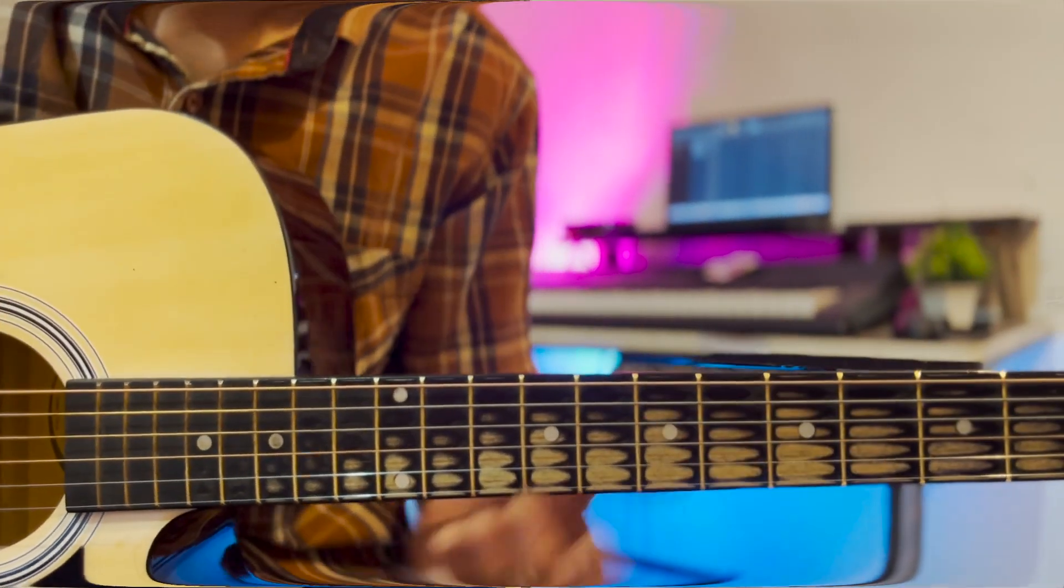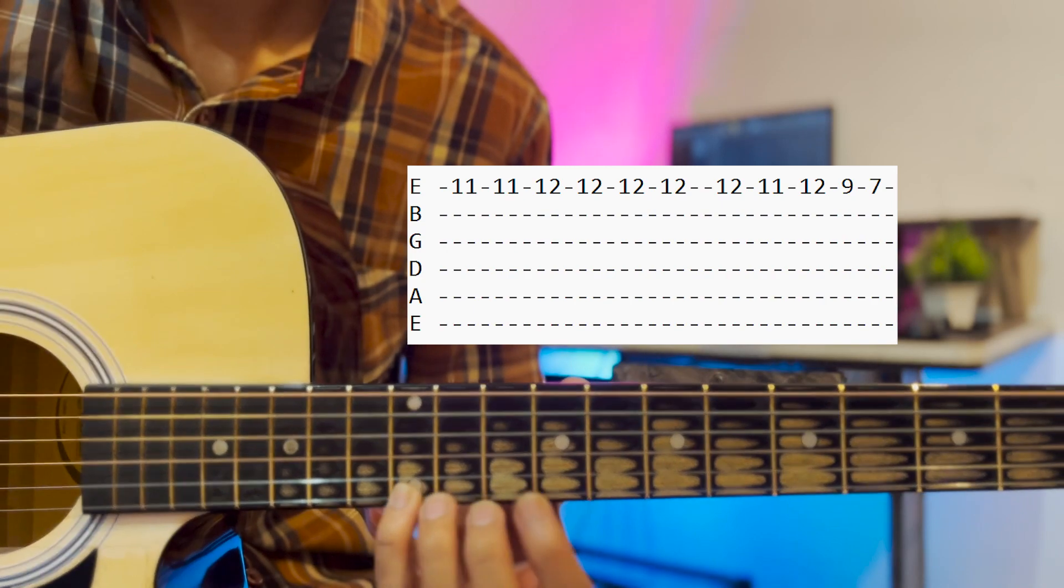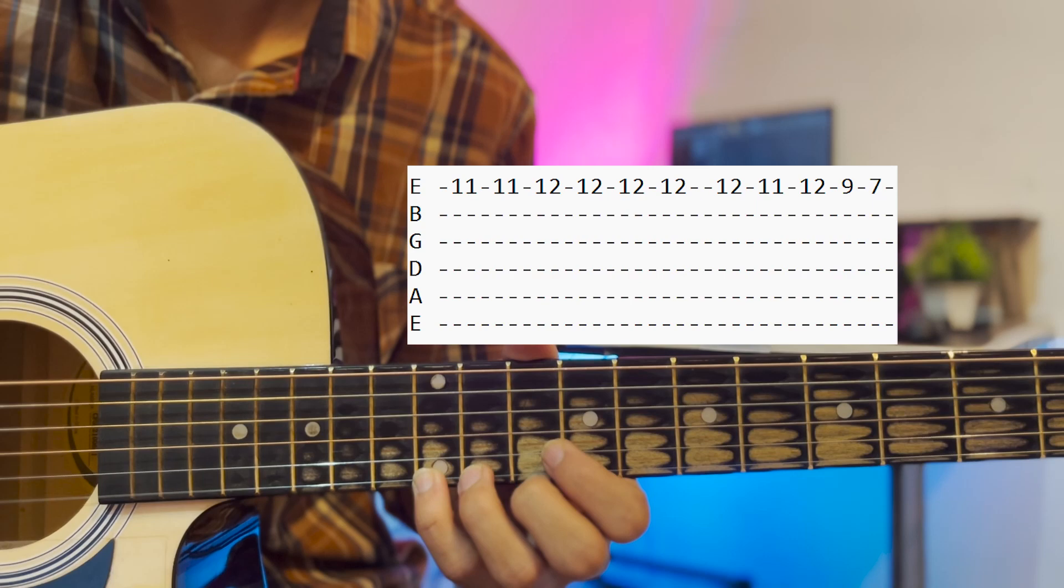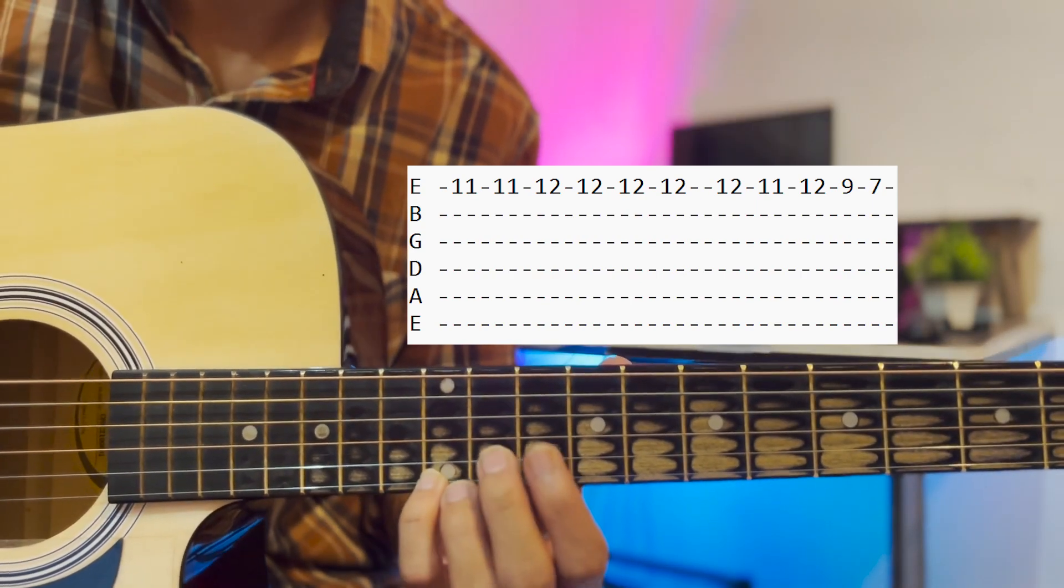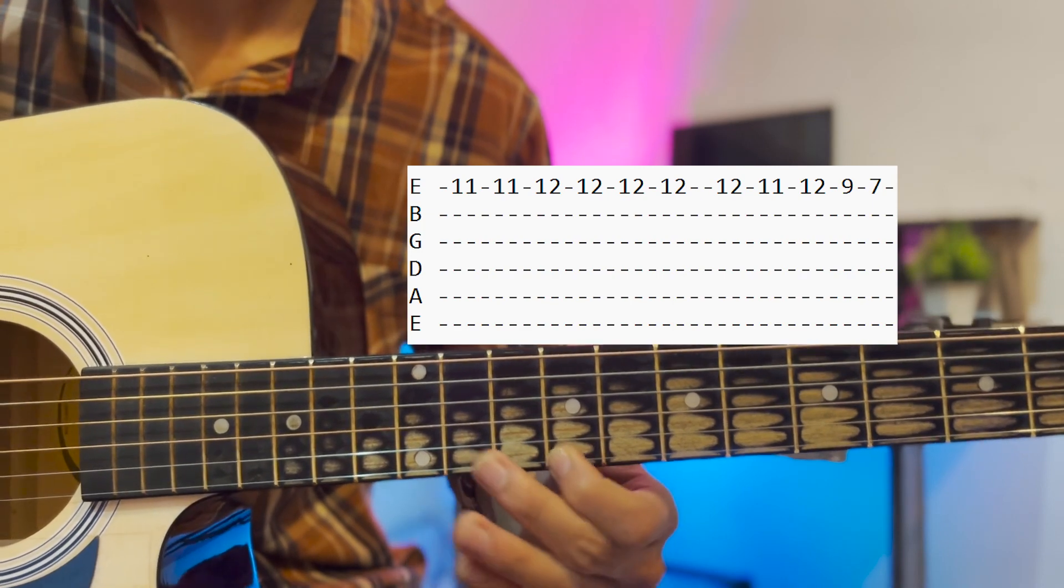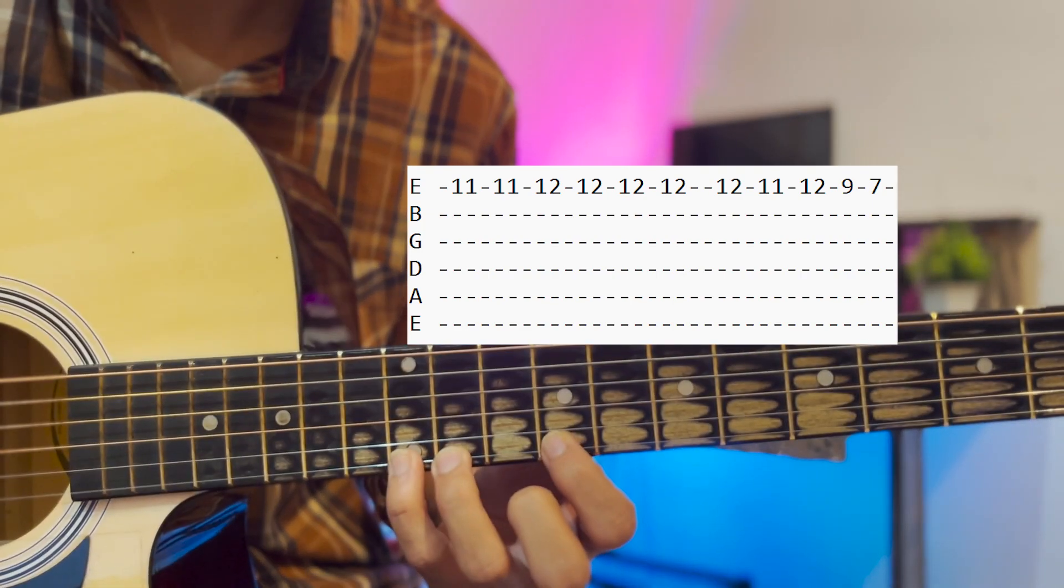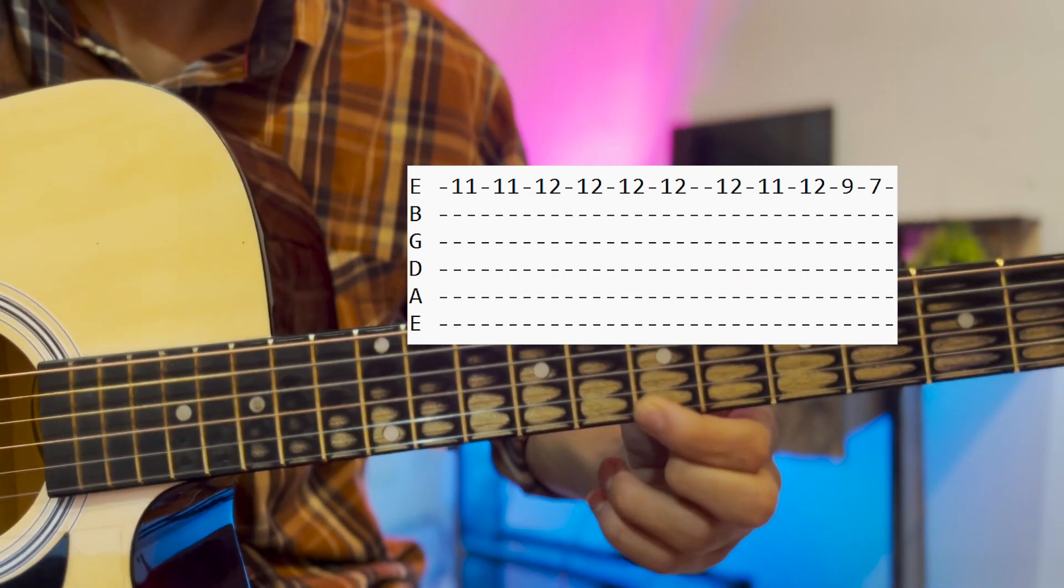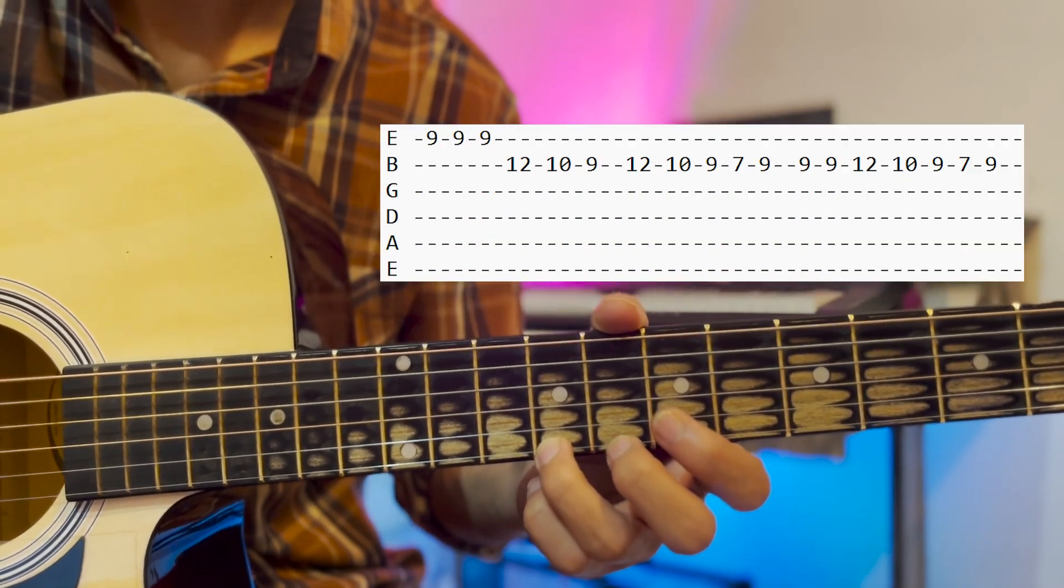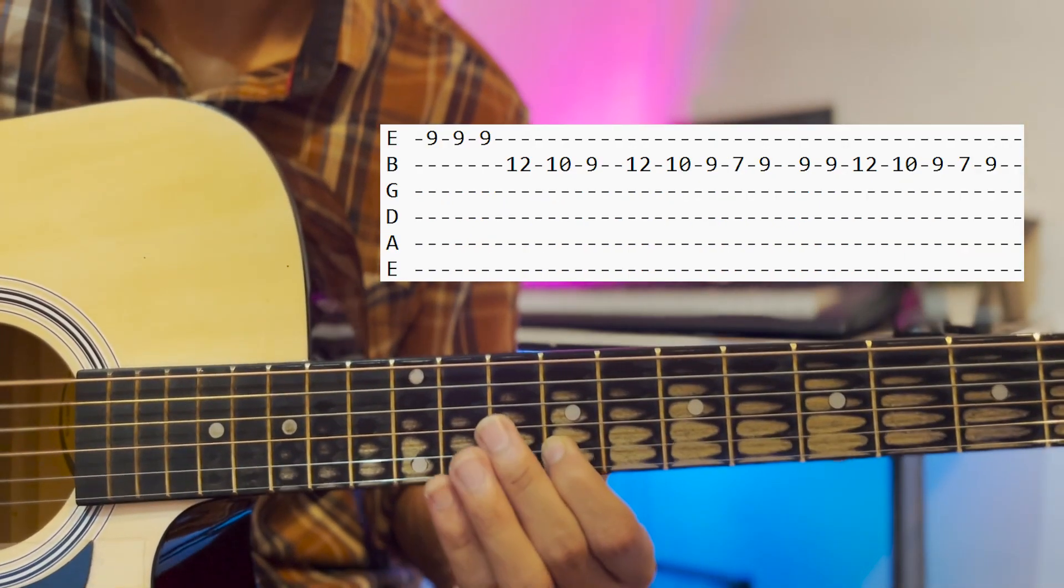So, next part starts from E11, E11, E11, E12, 4 times. So, it's like 9, 9, 9, 9, so the next part is 9, 9, 9, 12, 10, 9.